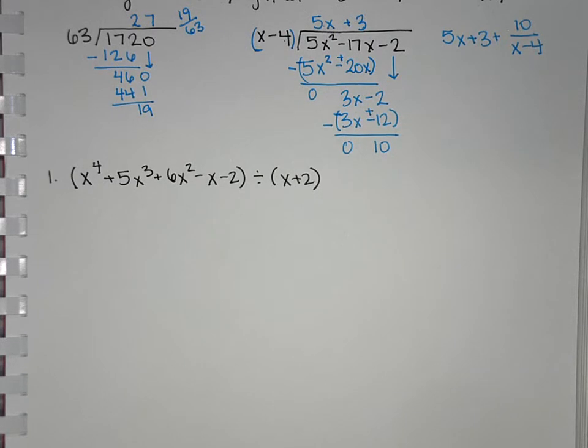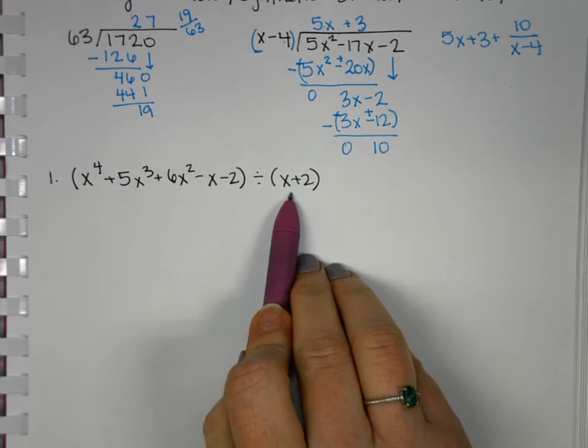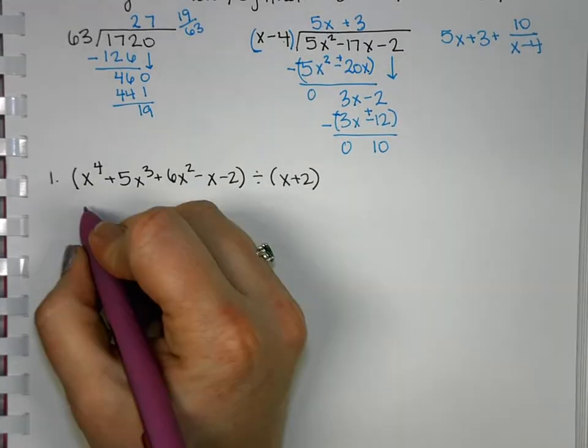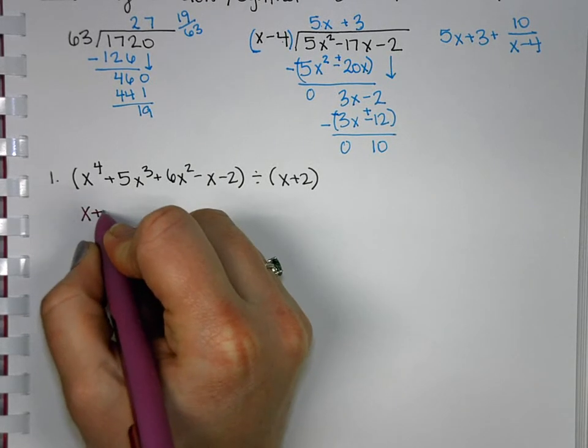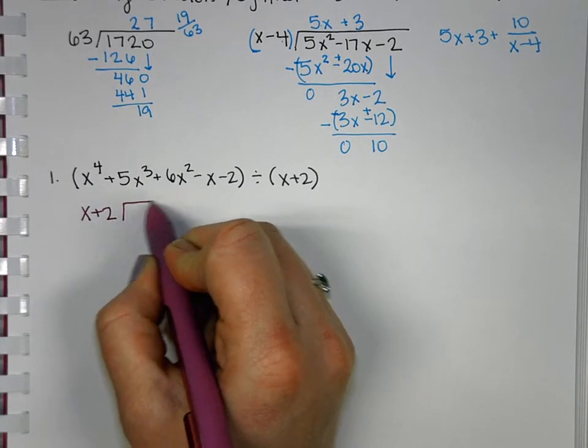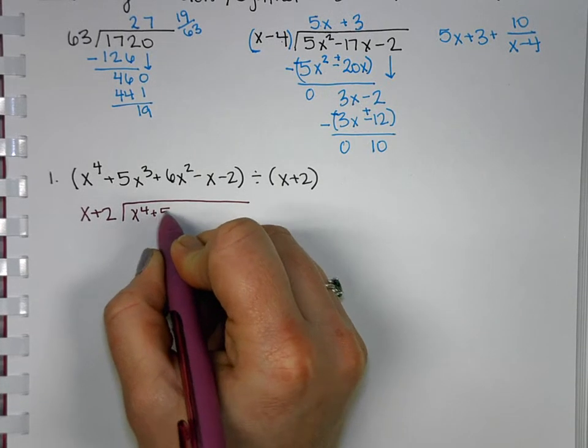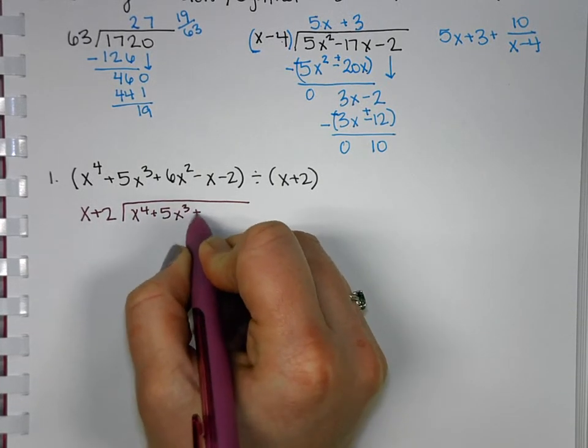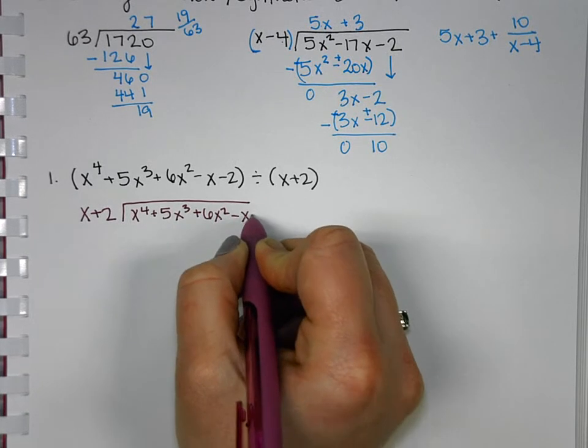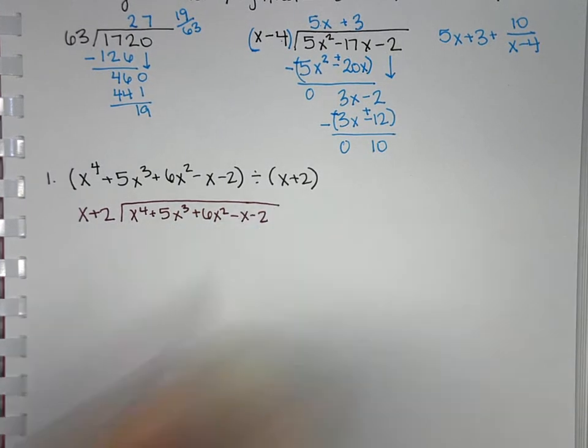So when you're given a problem like in this format, where you have a polynomial divided by a polynomial, which one goes outside, which one goes inside? So this is where we have to kind of think about, okay, what are we dividing by? We're dividing by x plus 2, so that has to go on the outside. And we're dividing x to the 4th plus 5x to the 3rd plus 6x squared minus x minus 2 by that.